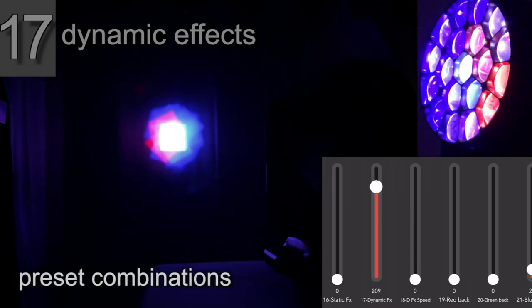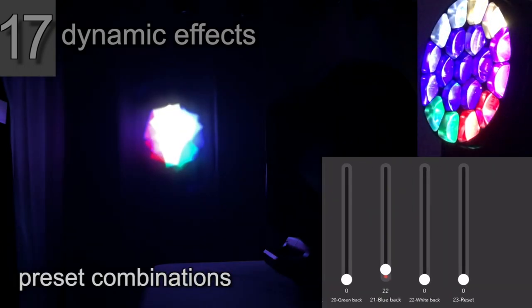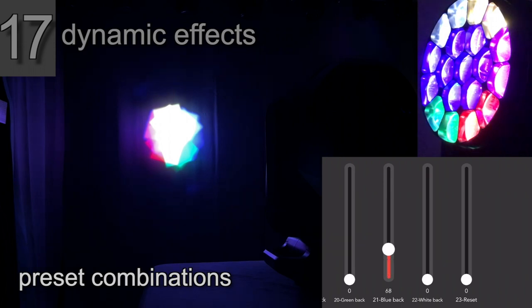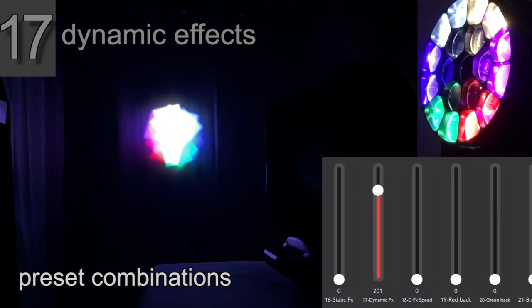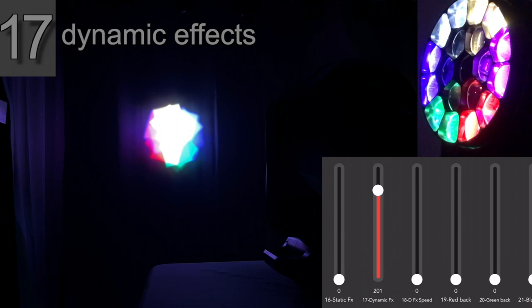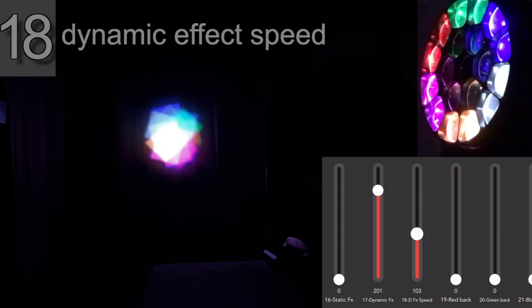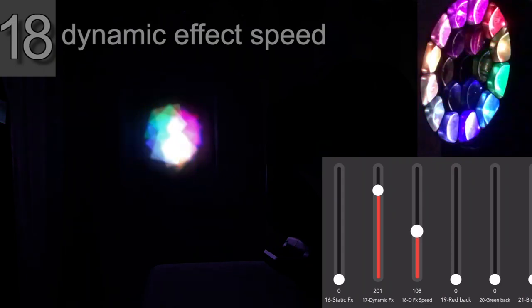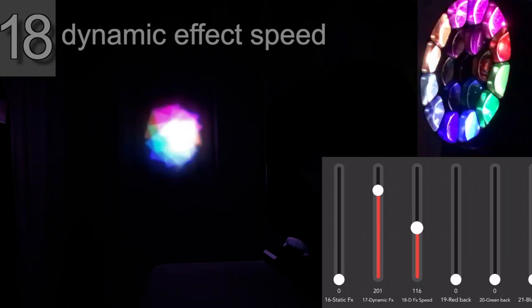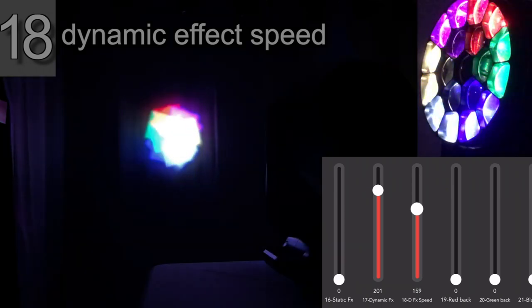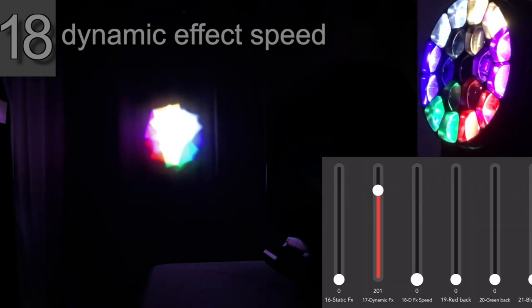And then you can see that there's different combinations. Again, in the higher values it's going to be set combinations. You could bring the background color up but we're going to take it out. The difference between dynamic effects and static effects is you can actually change the speed. So this is going to cycle the LEDs through their colors at different speeds and in different directions.